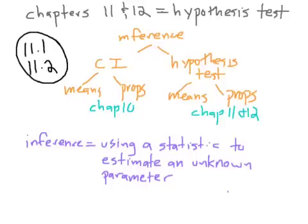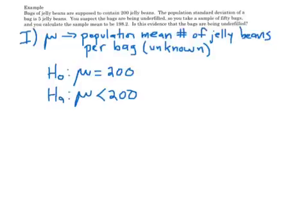I'm going to begin with a complete example and then we'll go through the vocabulary. Here's a silly example: bags of jelly beans are supposed to have 200 jelly beans. The population standard deviation — sigma — of a bag is 5 jelly beans. You suspect the bags are being under-filled, so you take a sample of 50 bags and calculate the sample mean, X-bar, to be 198.2. Is this evidence that the bags are being under-filled? Notice it doesn't say 'do a confidence interval.' The phrase 'is this evidence that' is a huge hint that you should be doing a hypothesis test.